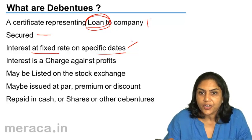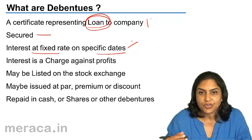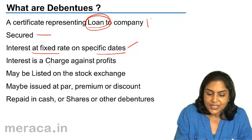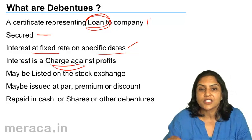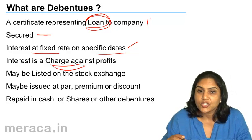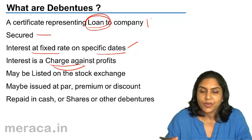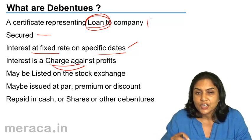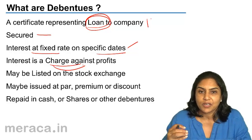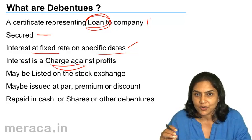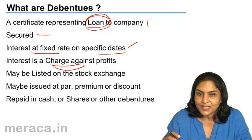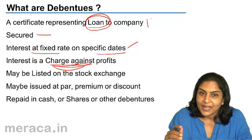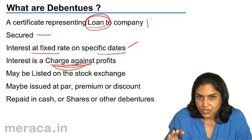Interest is the return on debentures, and since debentures are a loan, interest is actually a charge against profits — it is not a distribution of profit. Whether a company makes a profit or loss, interest is an expense just like any other expense, whether it be rent, salary, advertising, or whatever. So if the company is making losses, the interest will increase its losses.